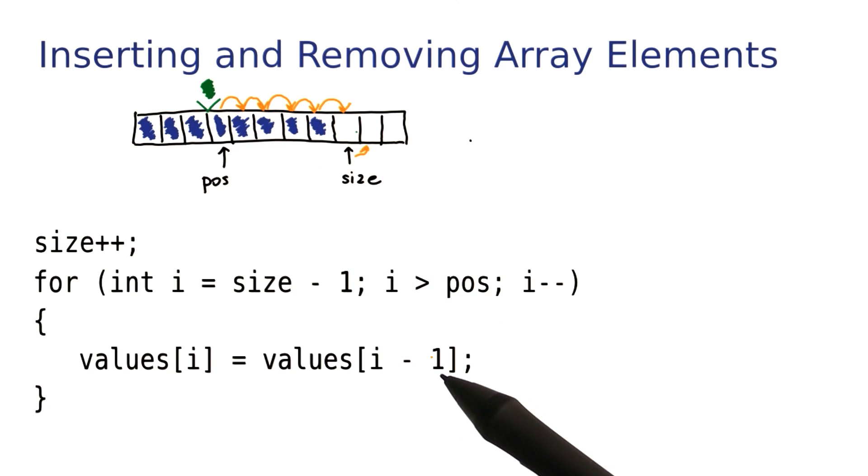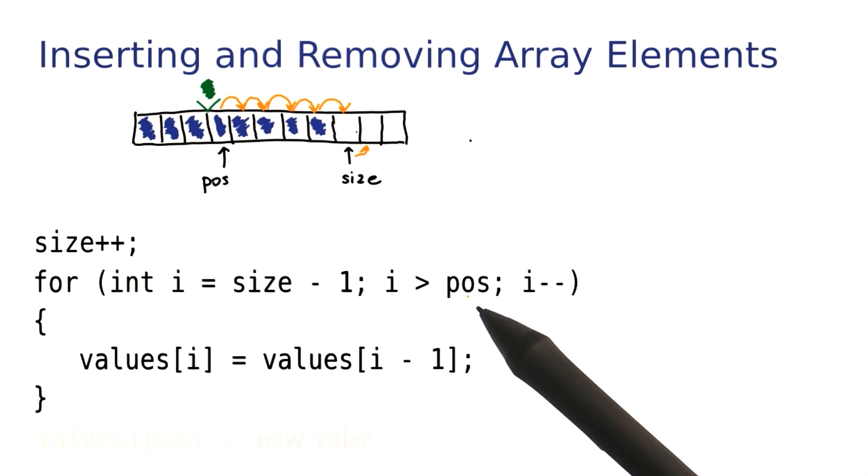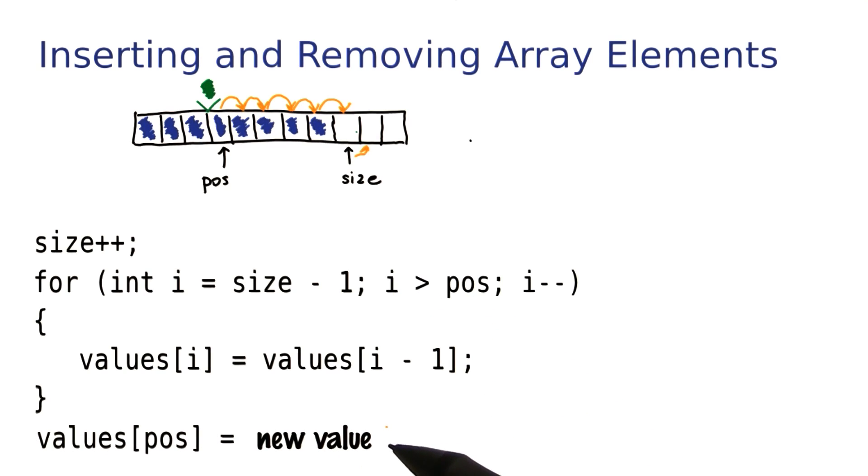And the last movement is the one position that moves pos to pos plus 1. So we want this one to be pos, which means we want i to be pos plus 1. And that's where we stop. Finally, when we're all done, we can insert the new value at the position pos.